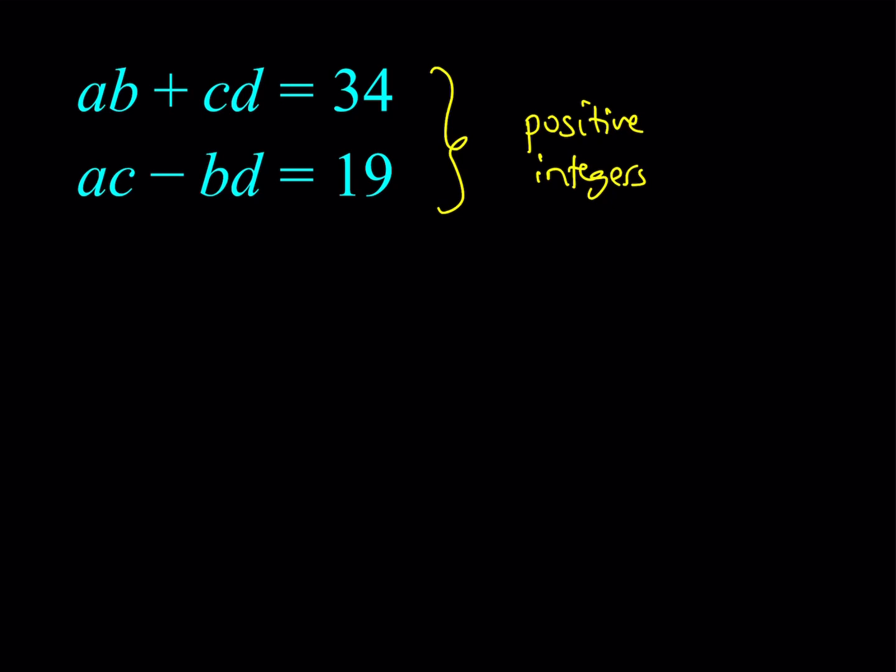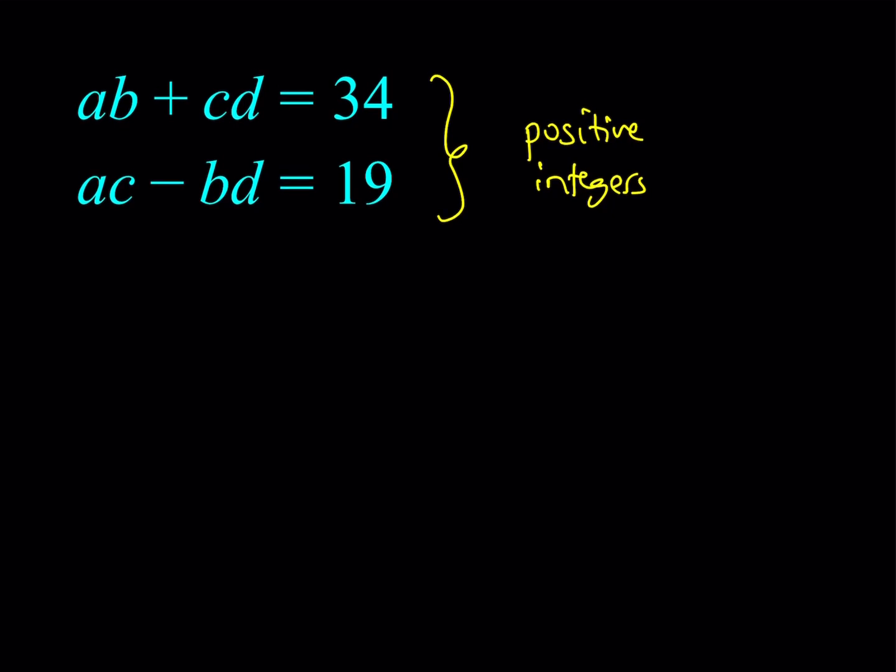To solve this system, I'm going to use a famous identity. I don't know what it's called. If somebody knows, please write it down in the comment section. You know how we have the Sophie Germain identity and other stuff. This one, I don't know if it has a special name, but it's a very useful identity, and I'll show you what it is.